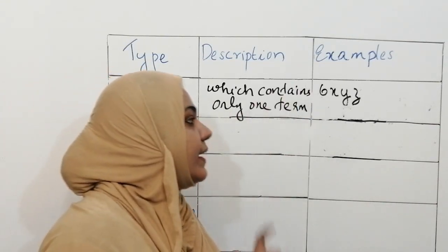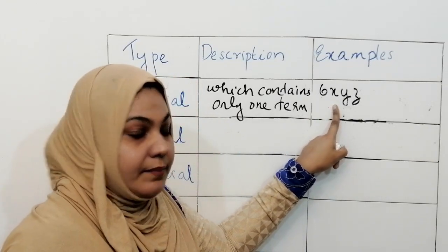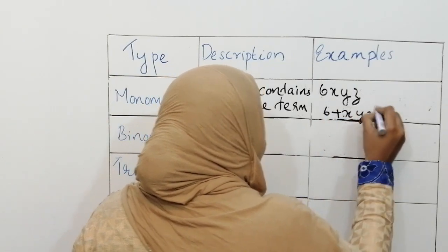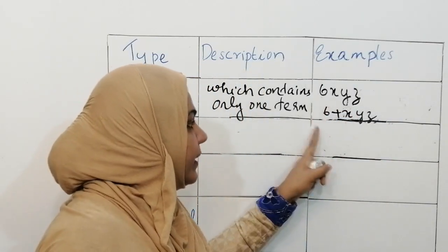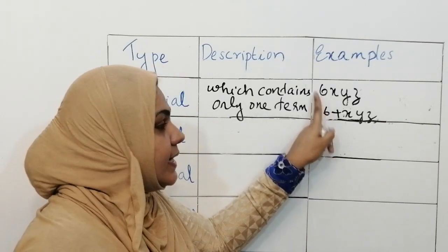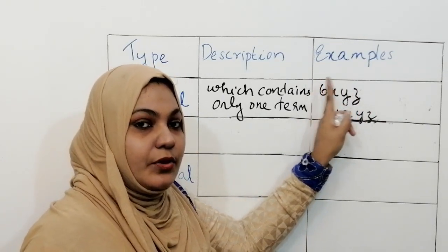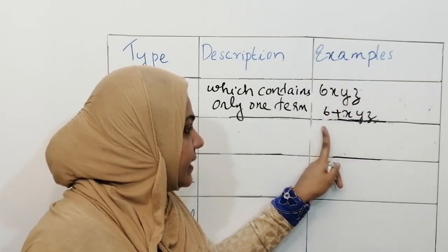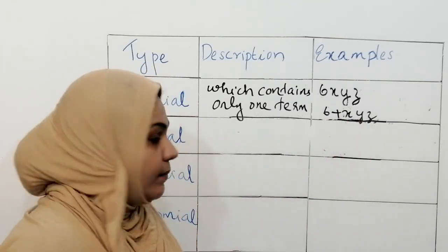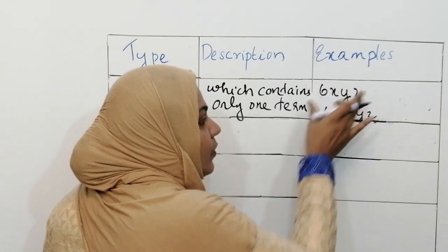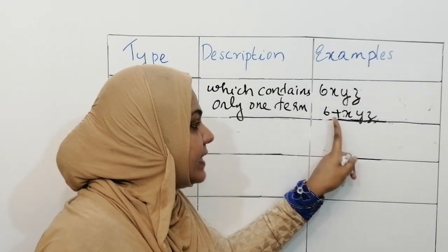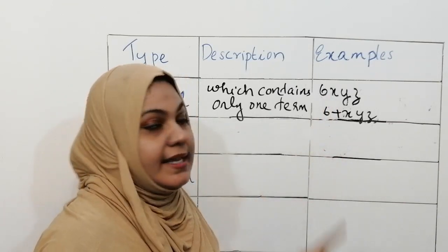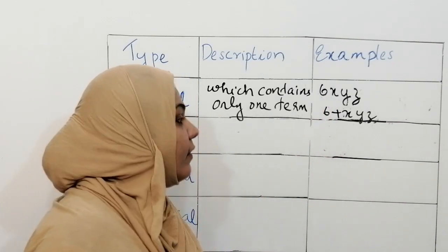Let's see examples of monomial. The first example is 6xyz — it contains only one term. Now consider 6 plus xyz. Can you identify the difference? In 6xyz, the 6 is multiplied by xyz, so we can't separate them — it is in product form. But in 6 plus xyz, 6 is one term and xyz is another term, so it has two terms. Therefore 6 plus xyz is not a monomial, but 6xyz is a monomial because it comprises only one term.